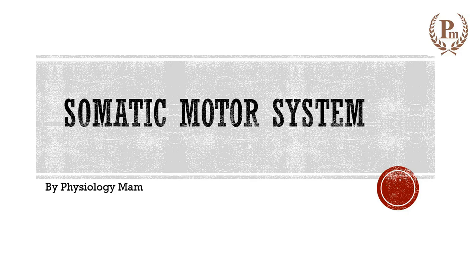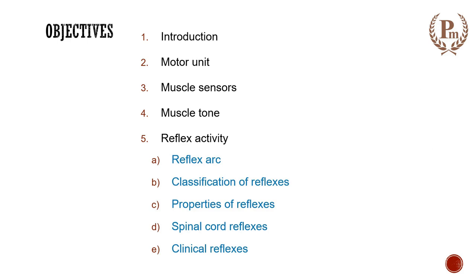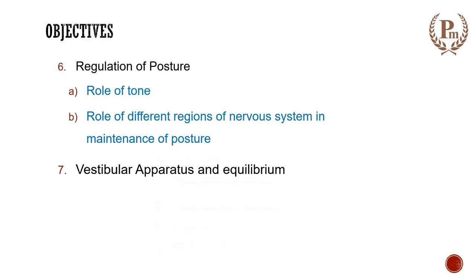Welcome to this series on the somatic motor system. In this series we are going to learn about motor unit, muscle sensors, muscle tone, reflex arc, classification and properties of reflexes, and different types of reflexes. We will also learn about posture and the role of tone and different regions of the nervous system in maintenance of posture.